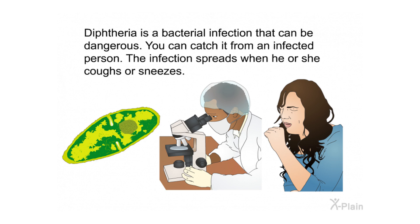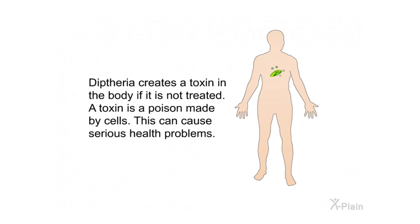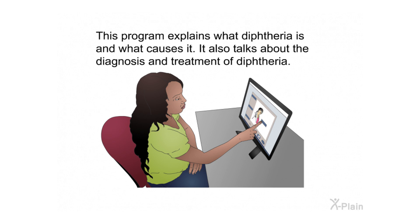Diphtheria is a bacterial infection that can be dangerous. You can catch it from an infected person — the infection spreads when he or she coughs or sneezes. Diphtheria often causes a bad sore throat and swollen glands. It can also cause a fever and chills. Diphtheria creates a toxin in the body if it is not treated. A toxin is a poison made by cells, and this can cause serious health problems.